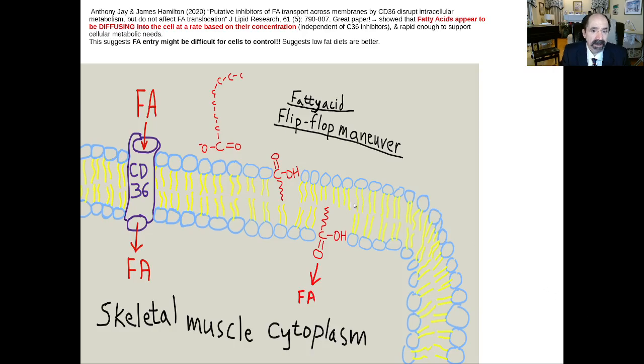There's a great paper here by Anthony Jay and James Hamilton from 2020 on Inhibitors of Fatty Acid Transport Across Membranes by CD36. The reason this is such a big deal is because the essential question is, what causes diabetes?